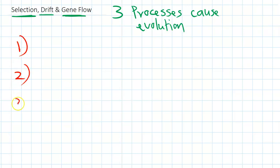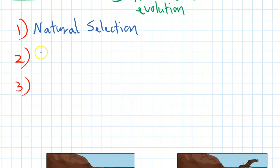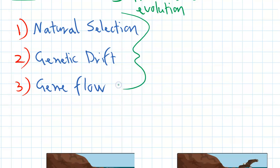These are the three processes we're going to talk about today. So three processes cause evolution. The first one is natural selection, and we've learned a lot about it already. The second one is called genetic drift, and the last one is called gene flow.